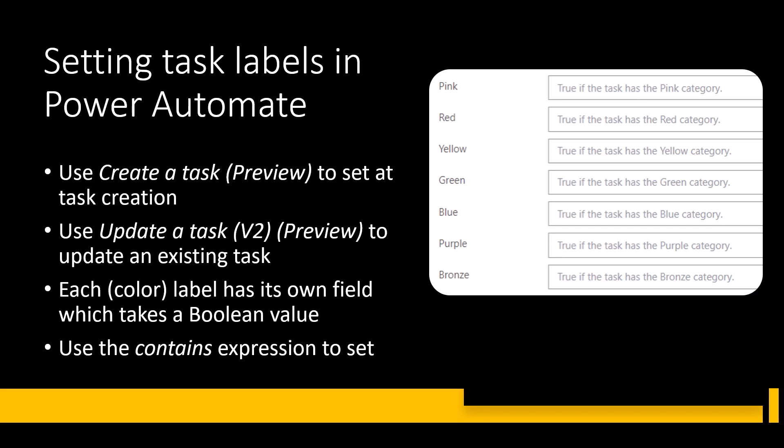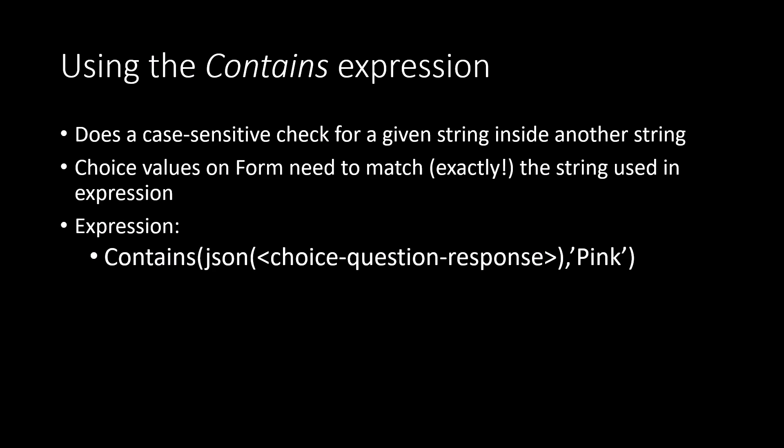Within that action, each of those color labels has its own field which takes a boolean value. If you want to apply the pink label, you need to set a value in that field that equates to true. You could hard-code a true, but that would become a very complicated mess — you'd need a condition or a switch — so instead we're going to use an expression.